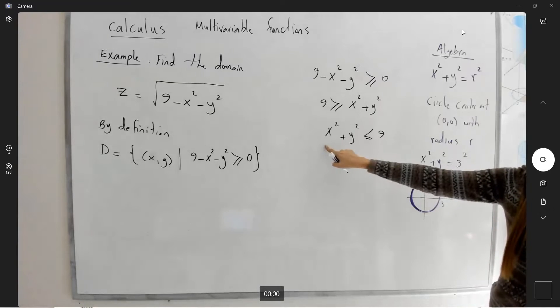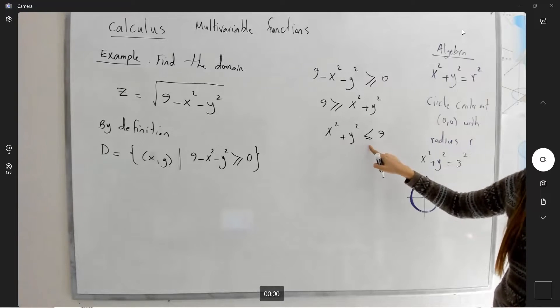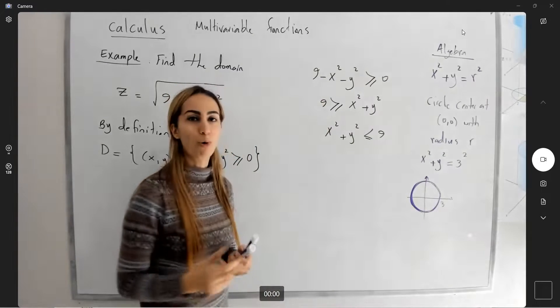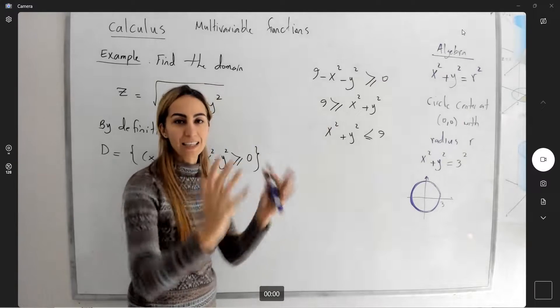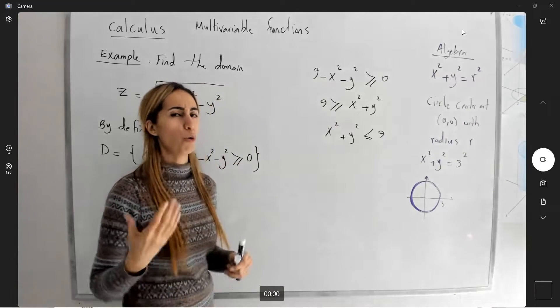But when it comes to x squared plus y squared less than or equal to 9, well, you have all points on and inside the circle, or you have a disk.